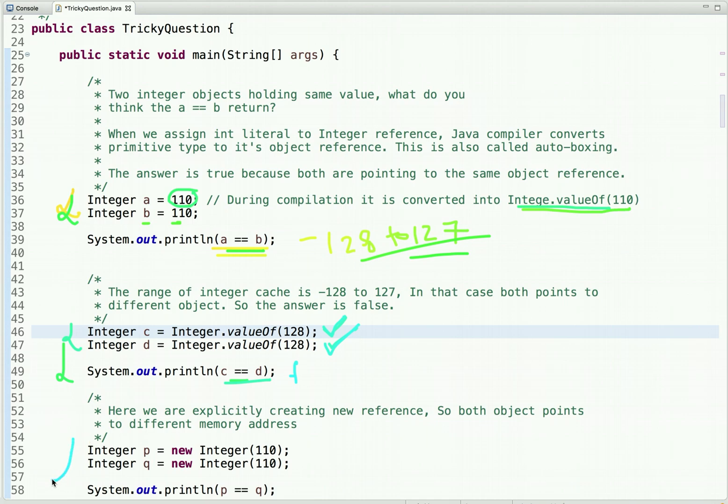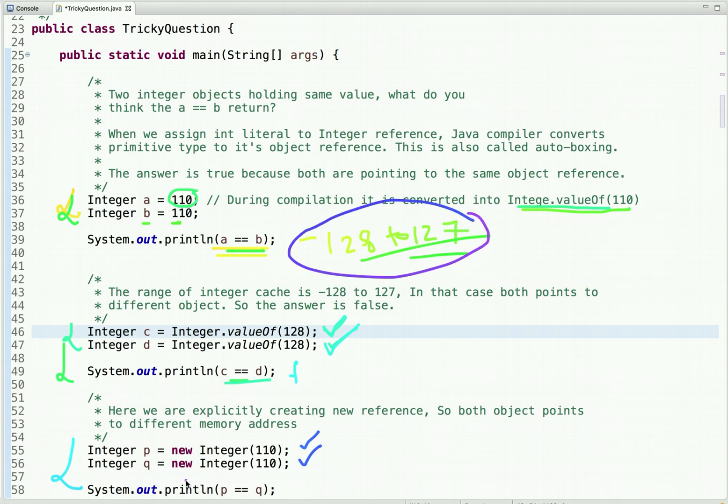Now let's move to the last statement. So here we are creating a integer object using new keywords. So definitely this integer cache will not work here. It will only work in the case of autoboxing. So in P different references assign and in Q different references assign, although 110 lies in this integer cache range.